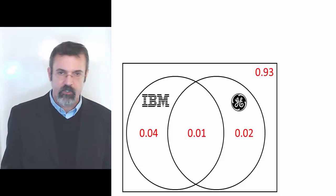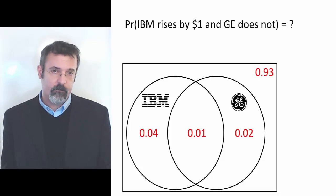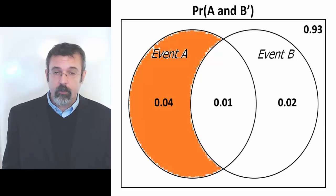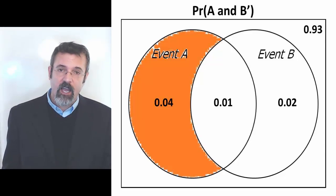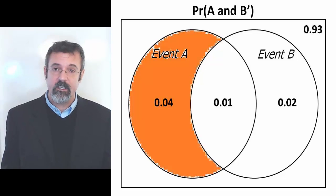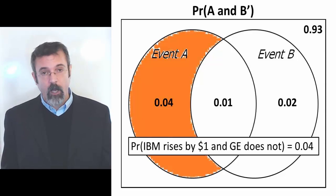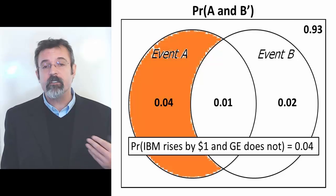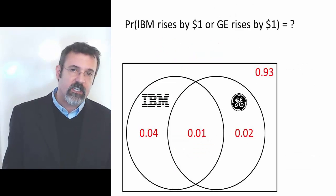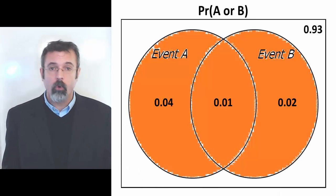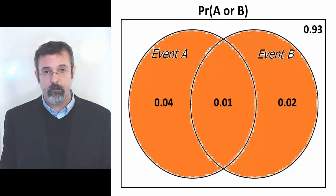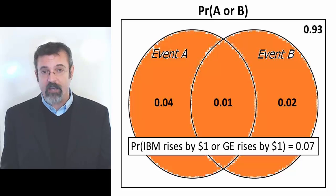With our Venn diagram completed, we can now answer all sorts of questions about IBM and GE stock. For example, suppose we want to know the probability of IBM stock rising by $1 and GE not rising by $1. On the Venn diagram, that is the left side of the Event A circle, which contains 4%. So we conclude that the probability of IBM rising by $1 and GE not rising by $1 is 4%. We can also ask: what is the probability of IBM stock rising by $1 or GE stock rising by $1? The disjoint probability of A or B occurring is all of the area within the two circles combined — that's 4% plus 1% plus 2%, or 7%.